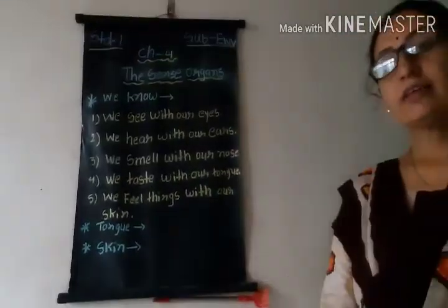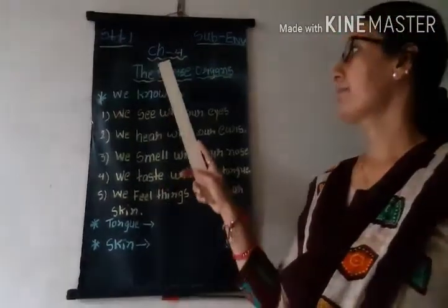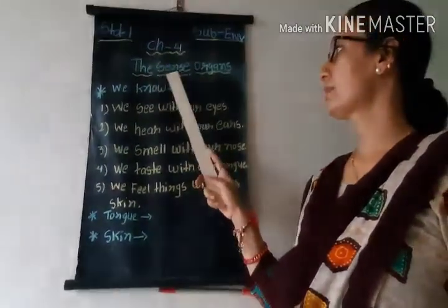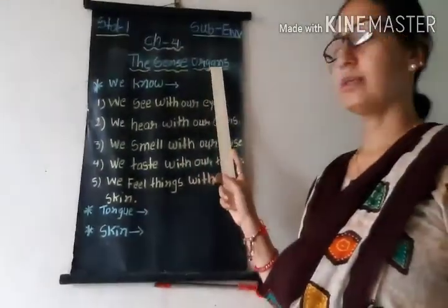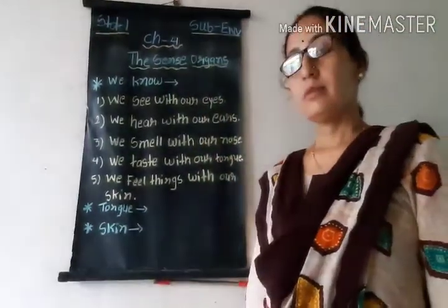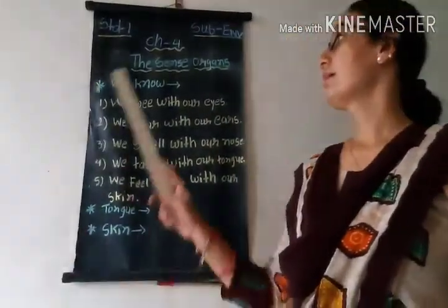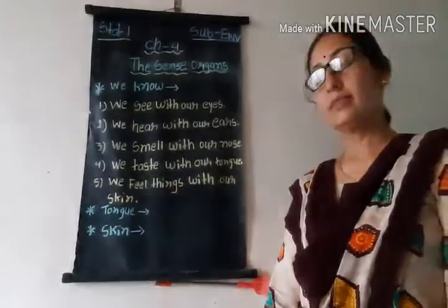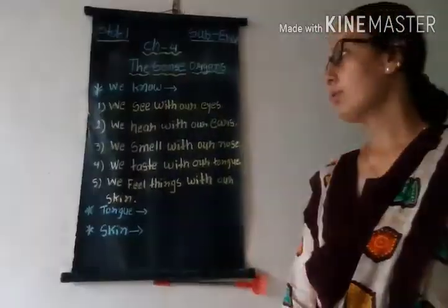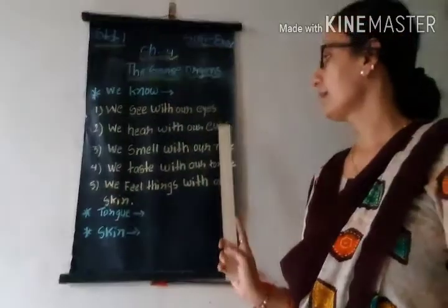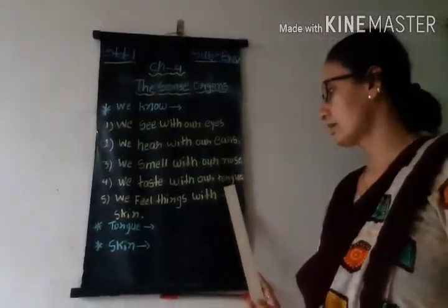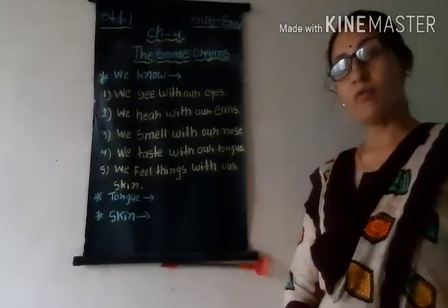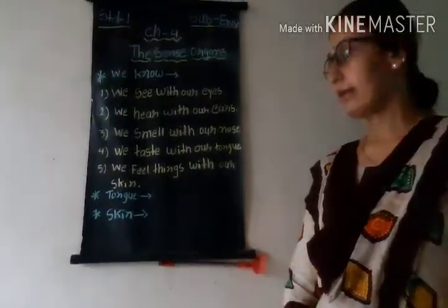In our previous class we have learned Chapter 4 — The Sense Organs. The Sense Organs was taught in this class. Do you know? Eyes, ears, nose, tongue and skin are very important parts of our body.